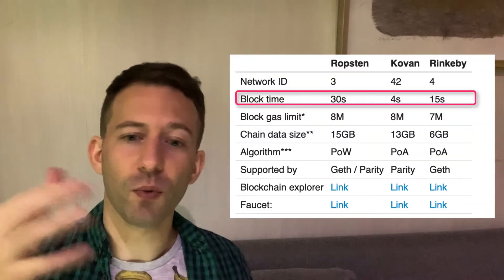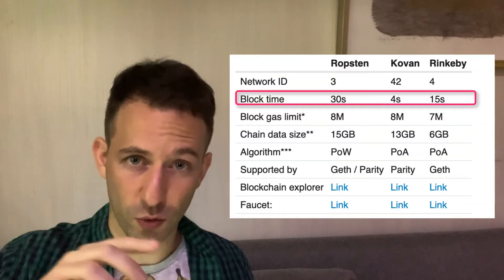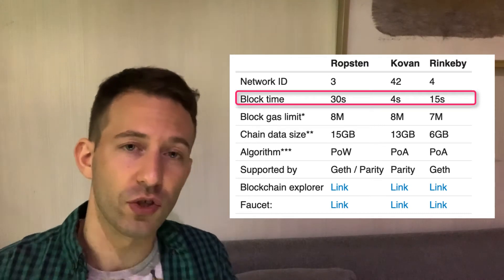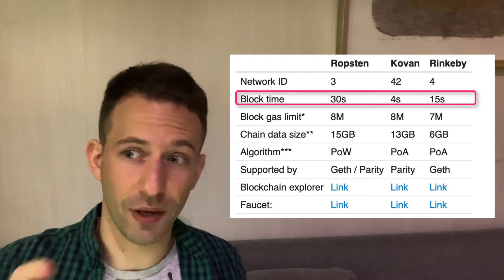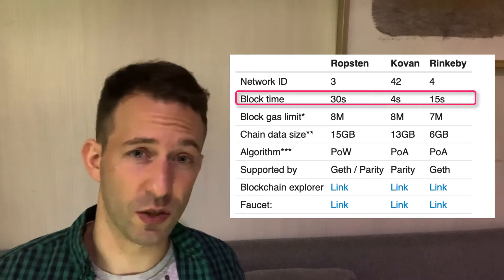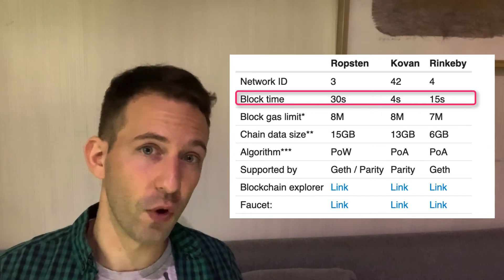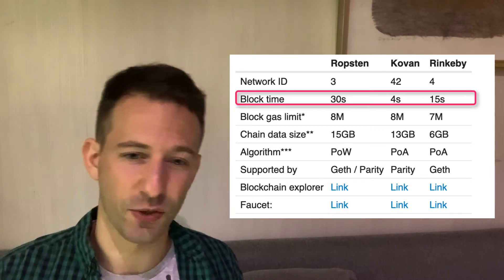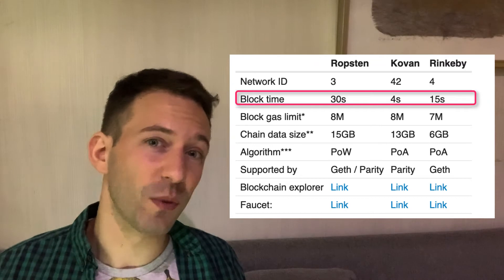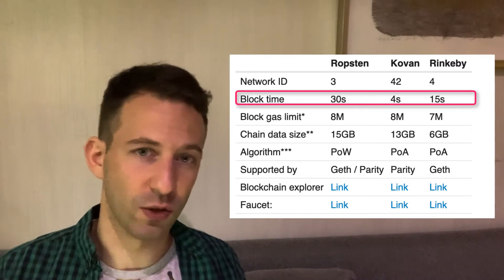First let's compare the block time — how long it takes to mine a block. For everything we're going to compare, we want each parameter to be as close as possible to Mainnet. On Ropsten the block time is 30 seconds, but on Mainnet it's 15 seconds, so it's a bit slow. On Kovan it's 4 seconds — convenient because it's fast, but very different from 15 seconds. On Rinkeby it's 15 seconds, so Rinkeby wins for that one.